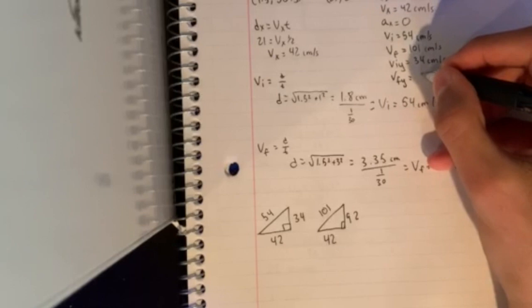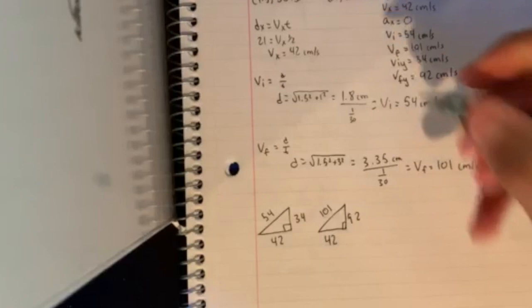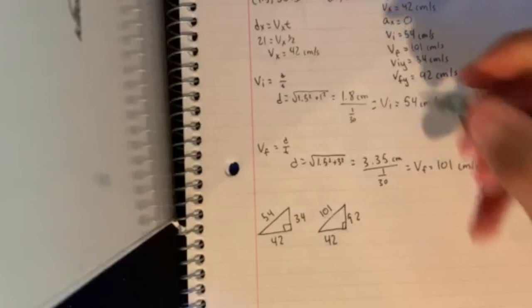And since we're going in the negative direction, it has to be negative because you're going in the negative direction. So it would be negative 92 and negative 34.